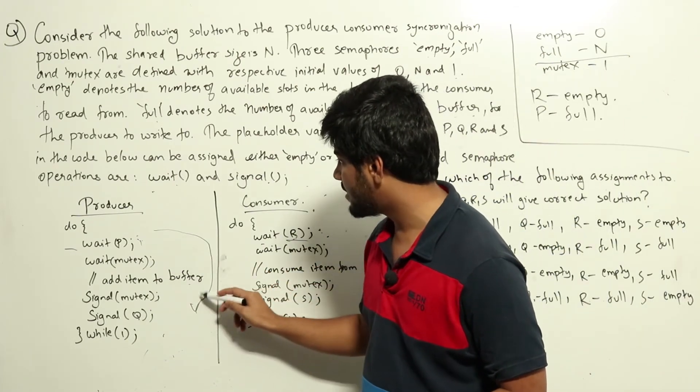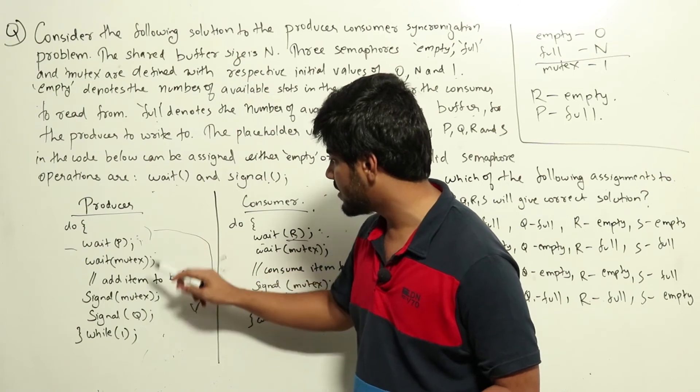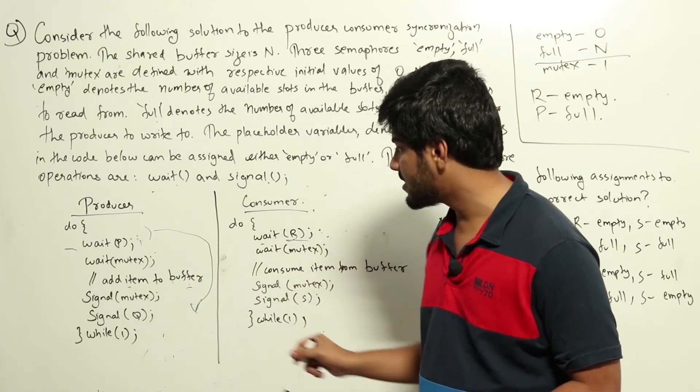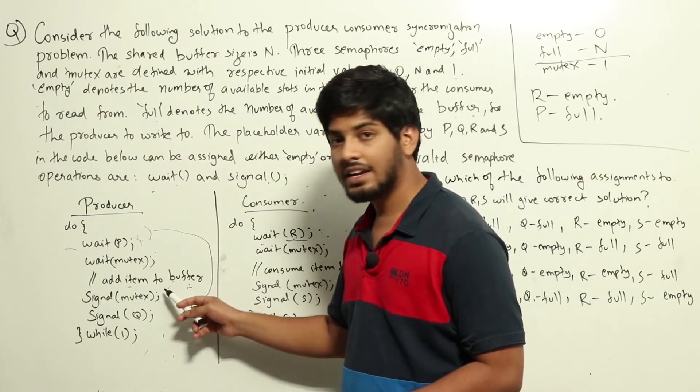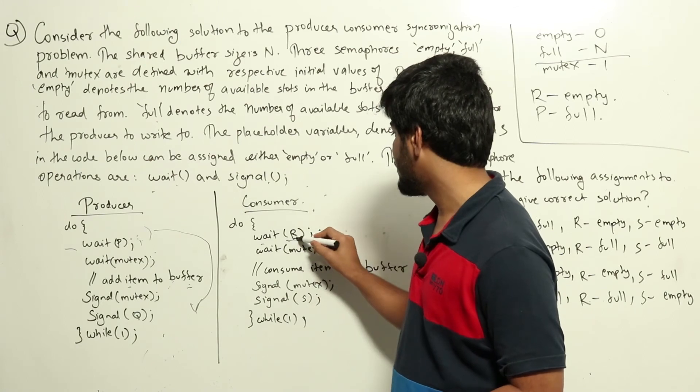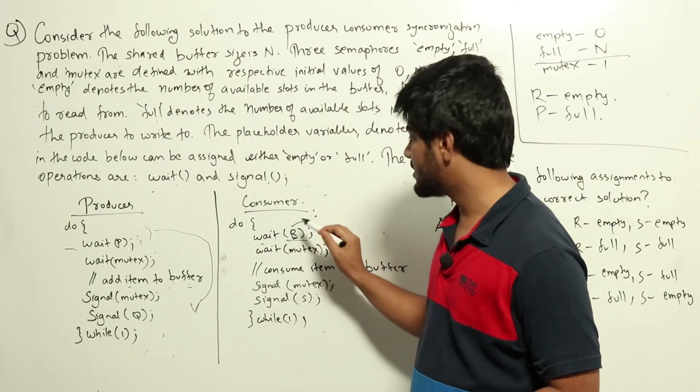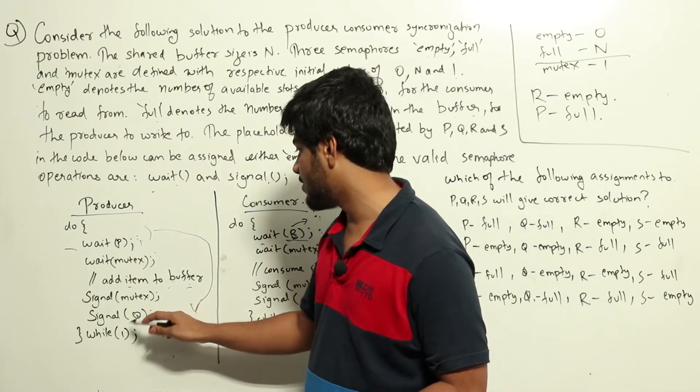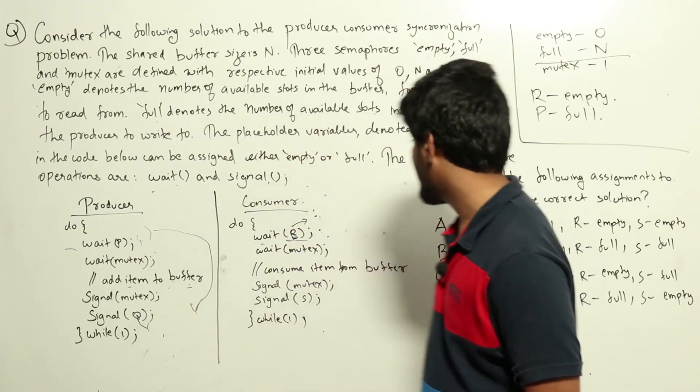And after this part, we have acquired the locks and then we are adding one item to the buffer. When we are adding one item to the buffer, we need to indicate that consumer can now start consuming. That means, the value of whatever is R, that should change. Initially, it was 0. It should change to 1. So whatever is R should be same as Q. Meaning, Q will be empty.